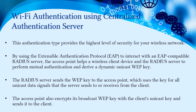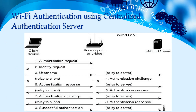Wi-Fi authentication using a centralized authentication server provides the highest level of security for your wireless network. It uses the Extensible Authentication Protocol (EAP) to interact with an EAP-compatible RADIUS server. The access point helps a wireless client device and the RADIUS server perform mutual authentication and derive a dynamic unicast WEP key. The RADIUS server sends the WEP key to the access point, which uses the key for all unicast data signals. The access point also encrypts its broadcast WEP key with the client's unicast key and sends it to the client.